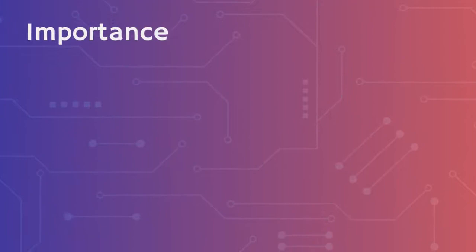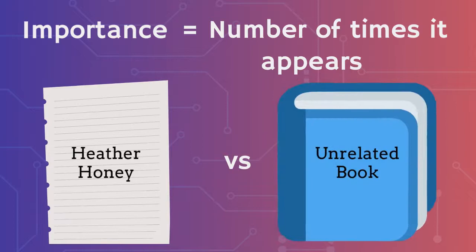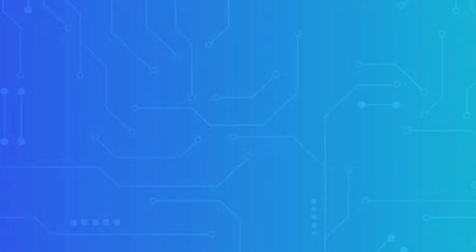To find out how important a word is to a document, you may want to count how many times the word appears in the document. A page about heather honey would probably mention heather a lot, but the 500 page book that isn't about heather doesn't mention heather very much at all.